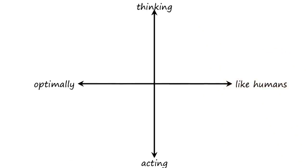Here is a second dimension for distinguishing between different schools of thought of AI. At one end of the spectrum, we can think of AI agents that are optimal. At the other end of the spectrum, we can think of AI agents that act and think like humans.